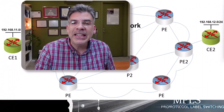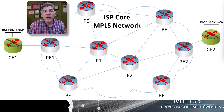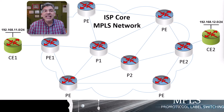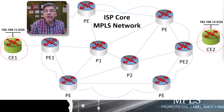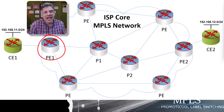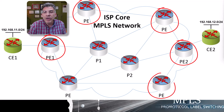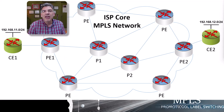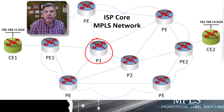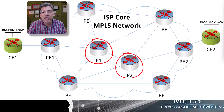In a typical MPLS topology like this one, we have the CE routers, the PE routers, and the P routers. CE stands for customer edge and these routers are located at the edge of each customer network. The CE routers connect to the provider edge routers, or PE routers, found along the perimeter of the MPLS network. Finally, we have the provider routers, or P routers, which constitute the very core of the MPLS network.